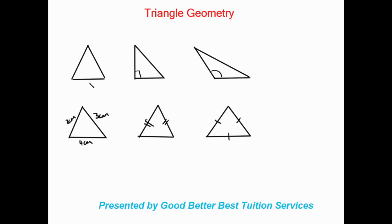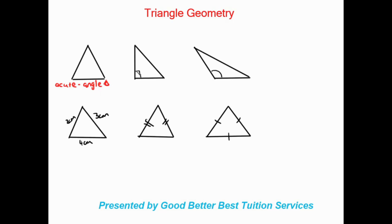We have six different kinds — sometimes they can fuse together but we'll look at them separately. Looking at the first triangle, we can identify it as a triangle where all the angles are acute, so this is called an acute angle triangle.